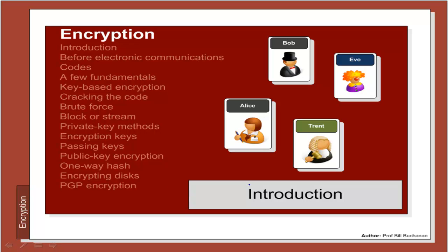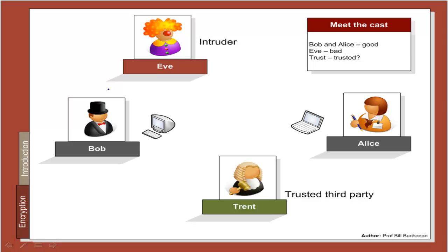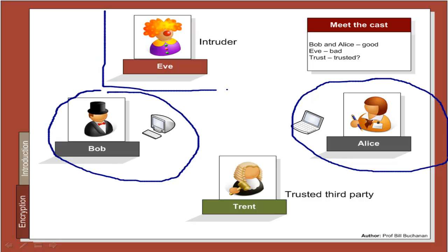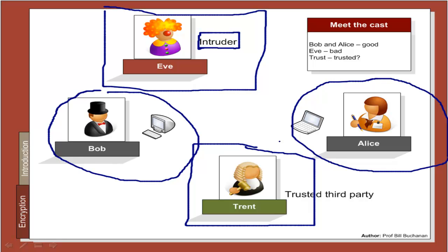Let's look at a basic introduction to encryption. The four characters we will look at are the good people Bob and Alice, who are trusted. Unfortunately we also have Eve, who we define as an intruder — we never define Eve as a hacker, since that implies guilt. We also need a third-party trusted person called Trent, who will be seen more in authentication than encryption. Basically, Bob and Alice are good and the intruder is not trusted.